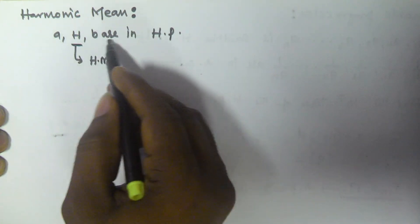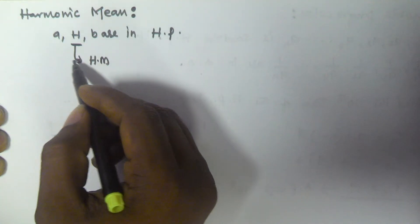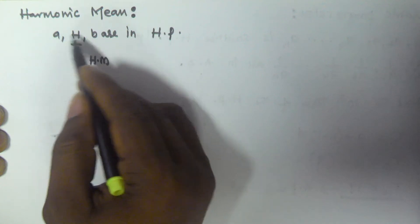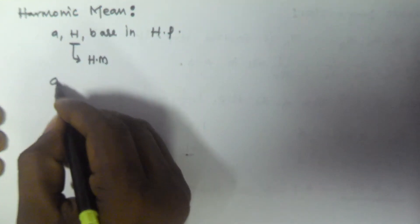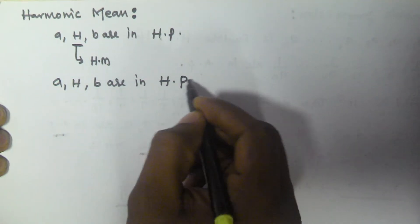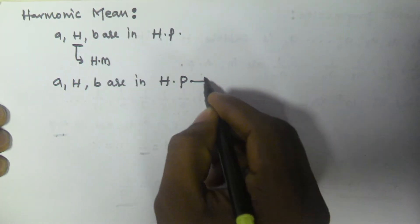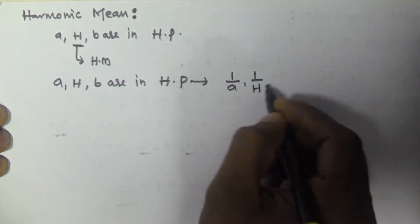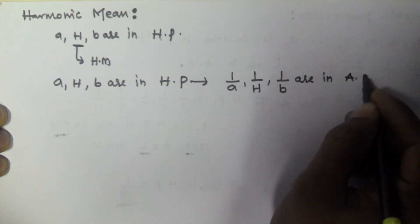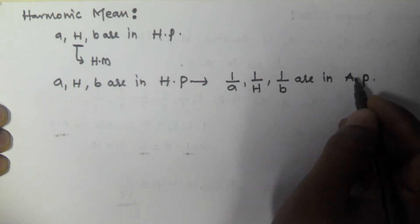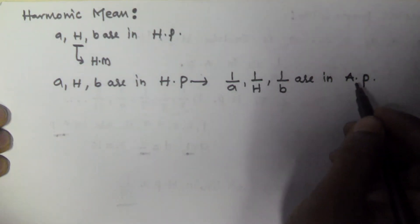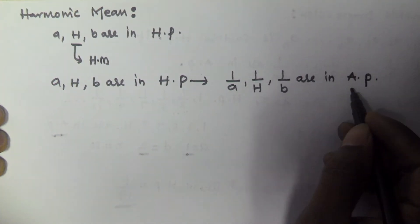Now we will find the value of the harmonic mean h of the two numbers a and b. If a, h, b are in harmonic progression, then their reciprocals — 1/a, 1/h, 1/b — are in arithmetic progression, according to the definition of harmonic progression.